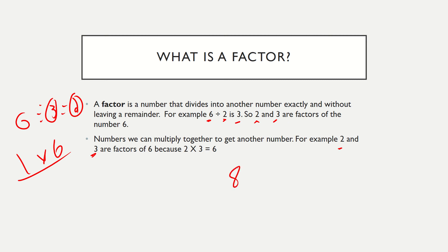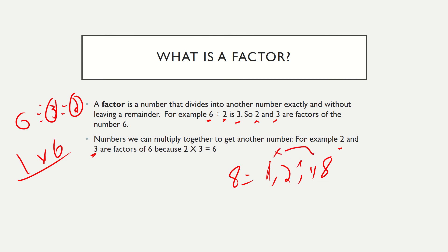Let's take the number eight — I want to know the factors. I could ask myself what divides into eight equally, and I would get one, eight, two, and four. What multiplies to get eight? Well, two times four, and one times eight. Those are a couple of ways of doing it — totally up to you which method you want to use.